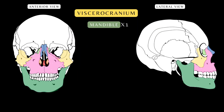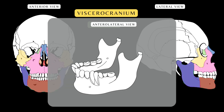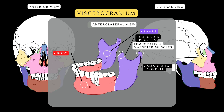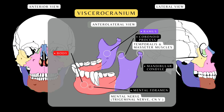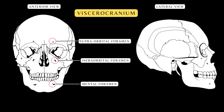The mandible is the largest bone in the human skull. It assists in mastication and forms the lower jawline. The mandible is comprised of an anterior portion called the body and a posterior portion called the ramus. On the ramus, the coronoid process acts as the site of insertion for the temporalis and masseter muscles. The mandibular condyle articulates with the mandibular fossa on the inferior aspect of the temporal bone to form the temporomandibular joint. The mental foramen is a bilateral opening in the anterior portion of the mandible where the mental nerve, a branch of the trigeminal nerve (fifth cranial nerve), exits. Notably, the mental, infraorbital, and supraorbital foramina all lie on the same perpendicular plane.